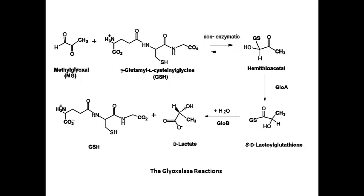The second enzyme, glyoxalase-2 (GLO-2, also known as GLO-B), catalyzes the hydrolysis of this thioester to D-lactate and glutathione. Another glyoxalase enzyme has been identified, termed glyoxalase-3, and it appears to directly convert MG into D-lactate.